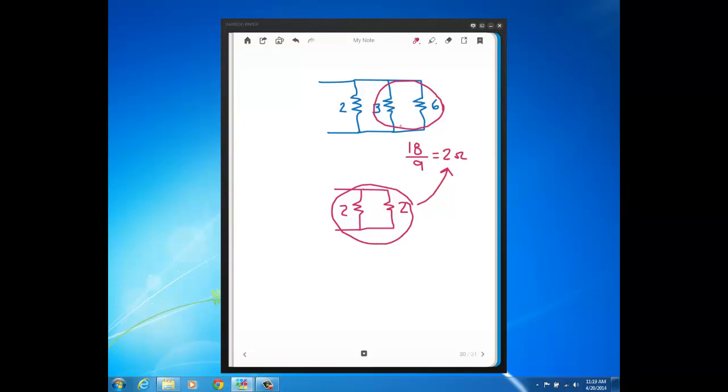To this 2 and also the 2 that came from the 3 and 6 in parallel and now when I do product over sum with those two resistors I'll get 4, 2 times 2, over 4, 2 plus 2, which equals 1 ohm.